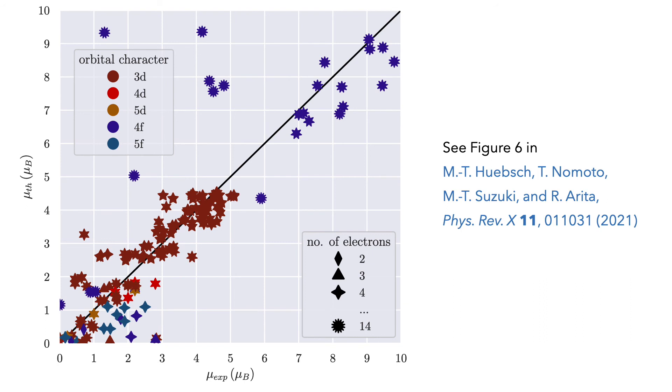While the prediction could be better in some cases, there is no systematic over- or underestimation. This suggests that the underlying mechanism is well captured and only the precision needs to be improved.